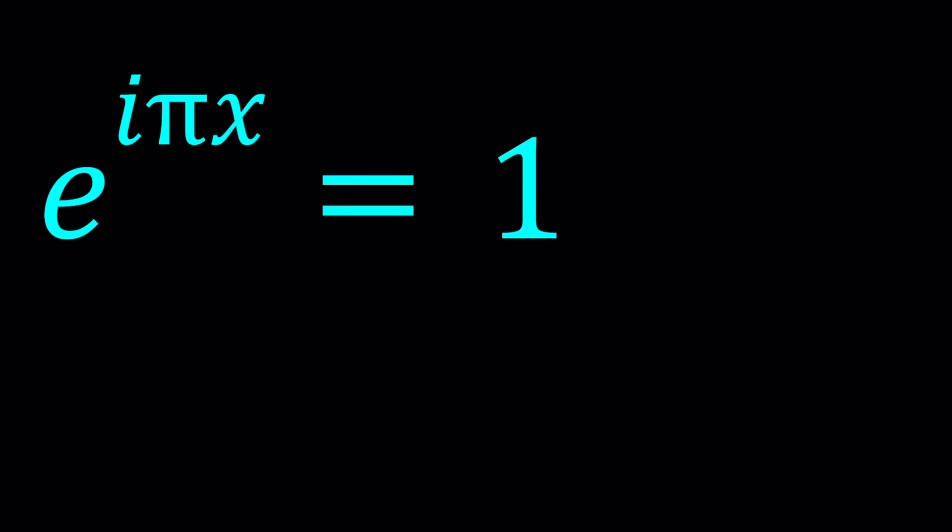So, we have e to the power i pi x equals 1, and we're going to be solving for x values. I'm not going to be able to show you a graph because I don't think Desmos can graph this. It's a really weird picture. But I'll show you the result from Wolfram Alpha.